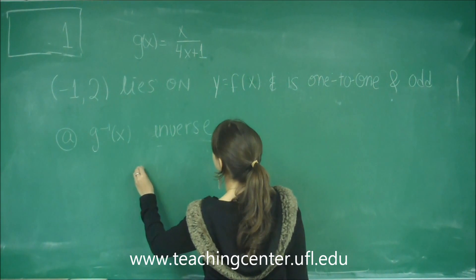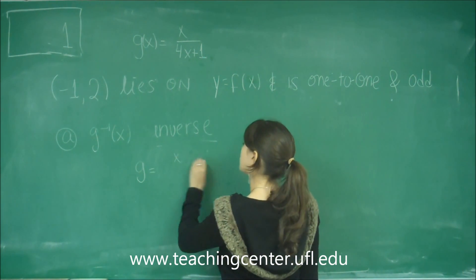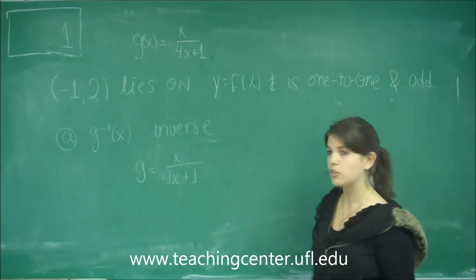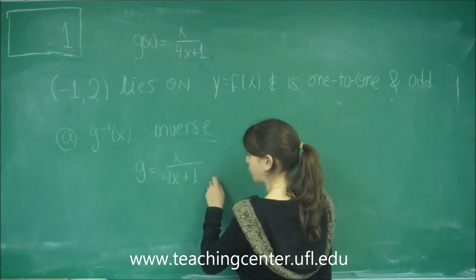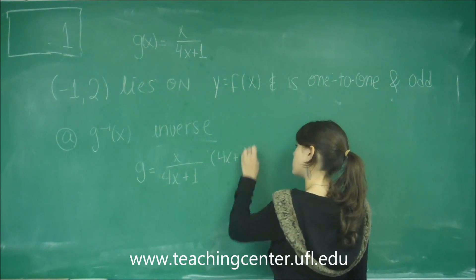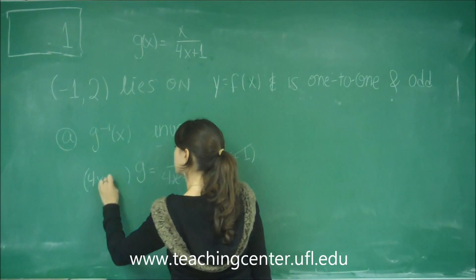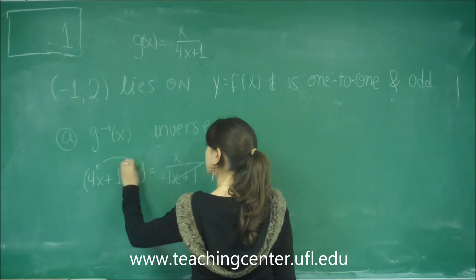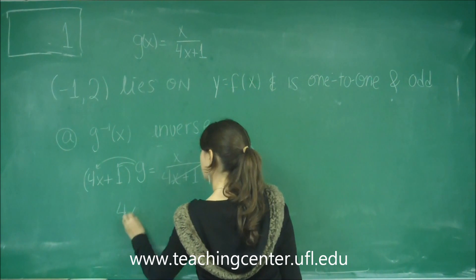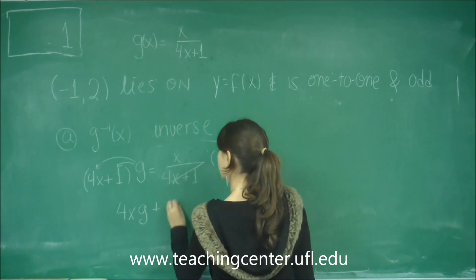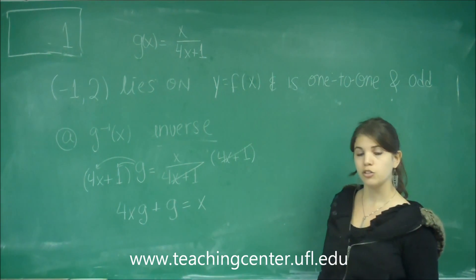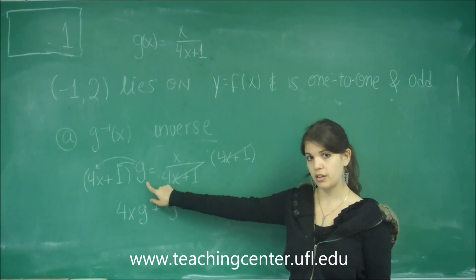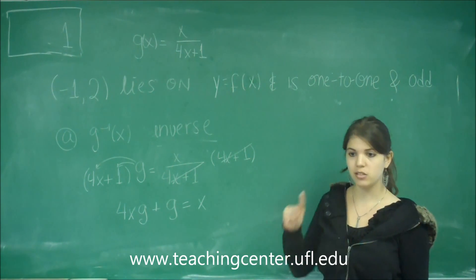So I have g equals x over 4x plus 1. The first thing to do is to get rid of the denominators. So I'm going to multiply both sides by 4x plus 1 to cancel this out. And I have 4x plus 1 on this side. I'm going to factor this in and I'm going to get 4xg plus g equals x. So you have to keep in mind which method you used. I started off with this, so I haven't switched the variables yet.